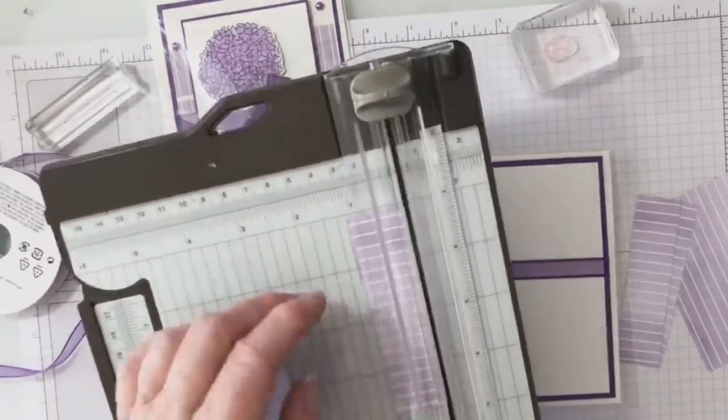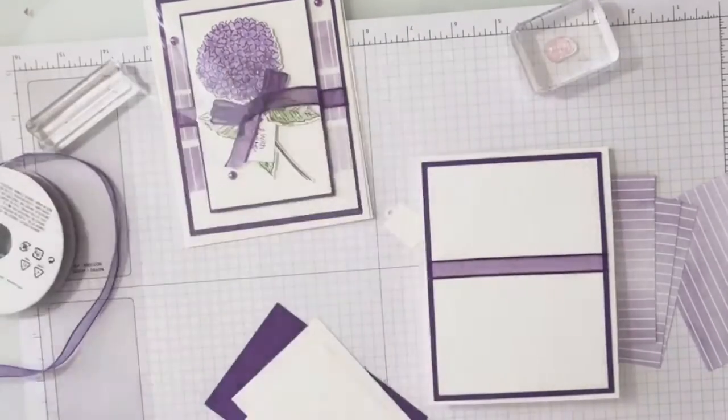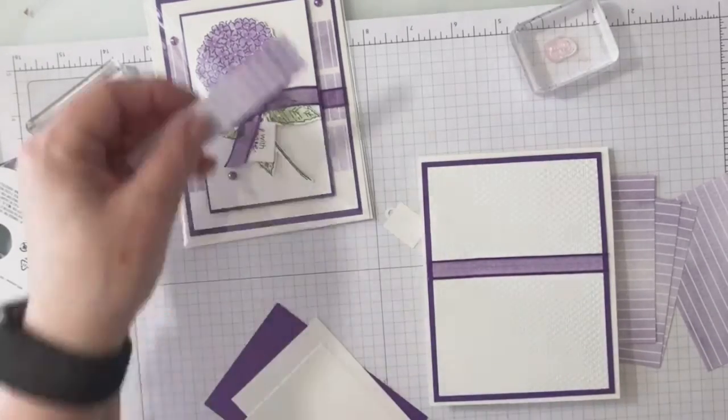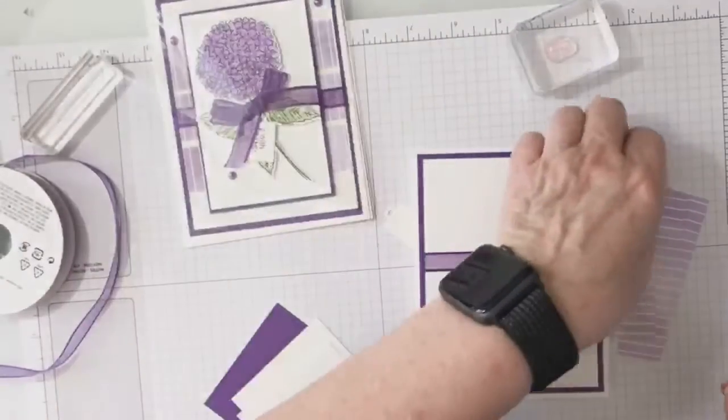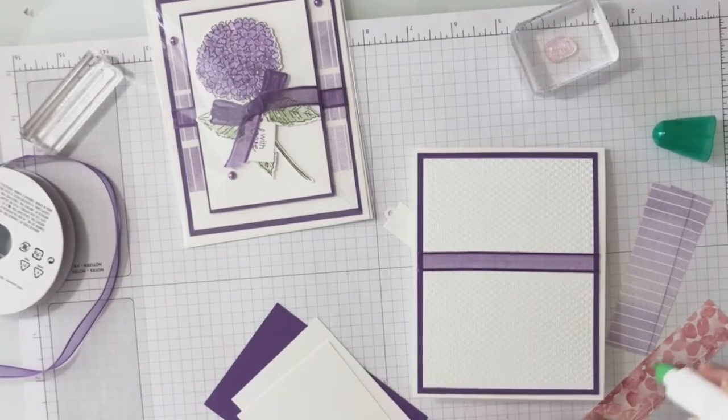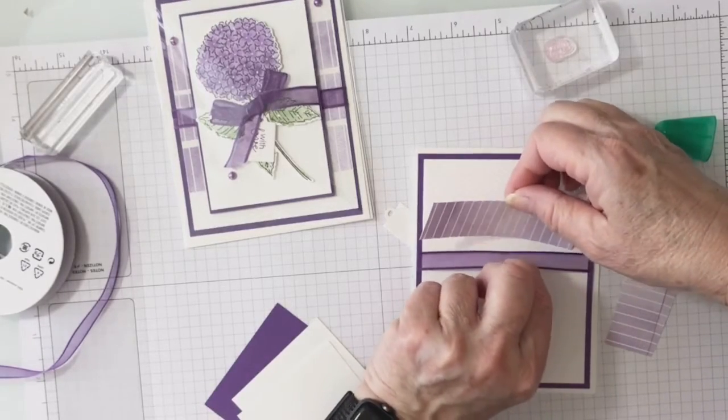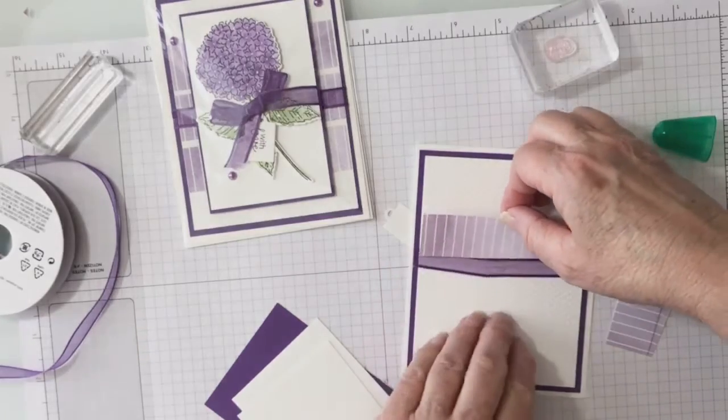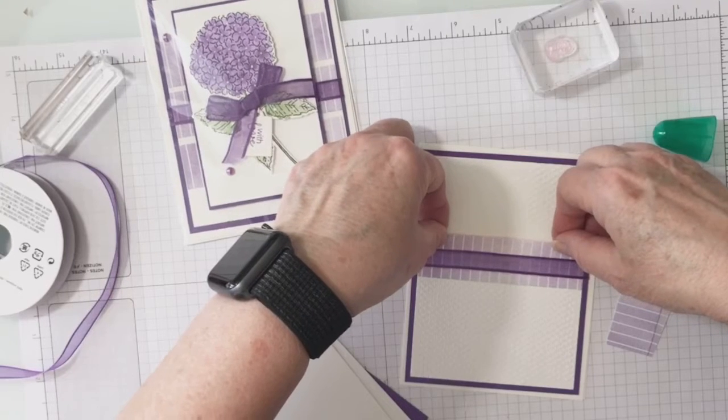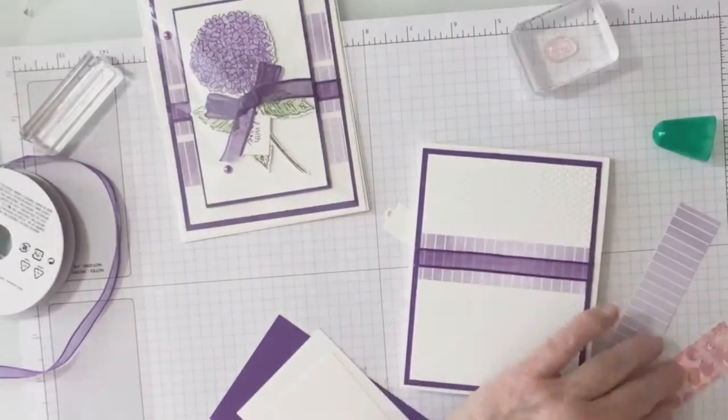This is what happens when you make something and then you don't do it for a while. You forget. I made this card way back in the beginning of January. Okay, so this one will be the tricky one, the one in the middle. I'm just going to slip it underneath here. You guys should do this before you put your ribbon on, it works much easier. But you know what, that worked. Now I can put the other two on.